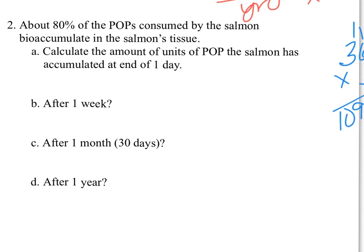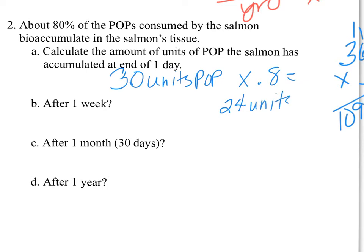Number two: about 80% of the POPs consumed by the salmon accumulate in the salmon's tissues. Part A — calculate the units of POP the salmon has accumulated at the end of one day. We take our answer from 1A, which was 30 units, and multiply by 0.8 (80%). So 30 times 0.8 equals 24 units of POP.